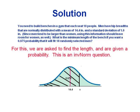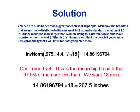Shading to the left is the direction inverse norm expects. So: inverse norm of 0.975, with the mean and standard deviation adjusted for a group — standard deviation divided by the square root of 18. That comes out to 14.86 inches. But don't round yet! That's the average per man. Multiply by 18 before rounding: 14.86 × 18 gives a total bench length of 267.5 inches, rounded to one decimal place to match the precision of the given mean and standard deviation.